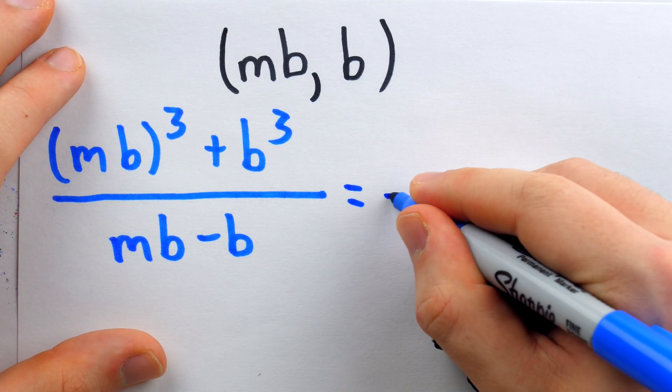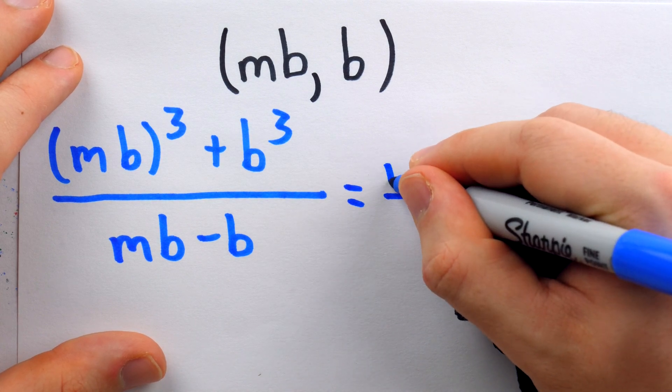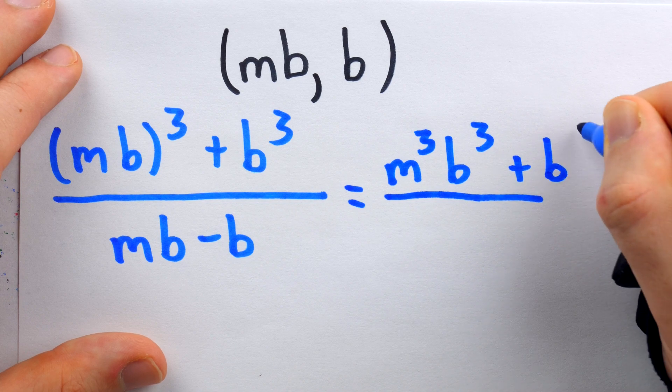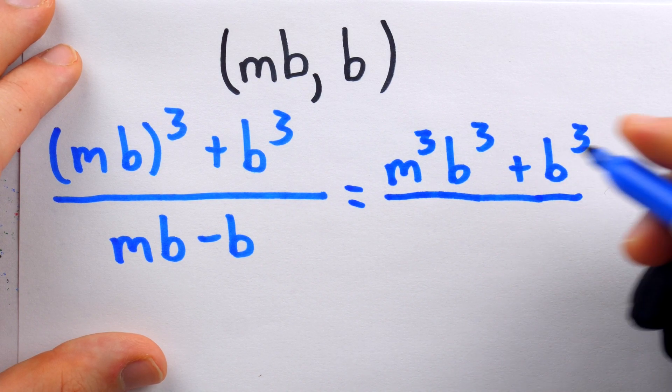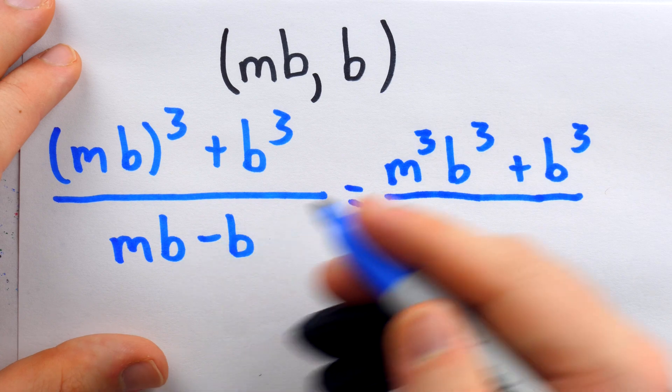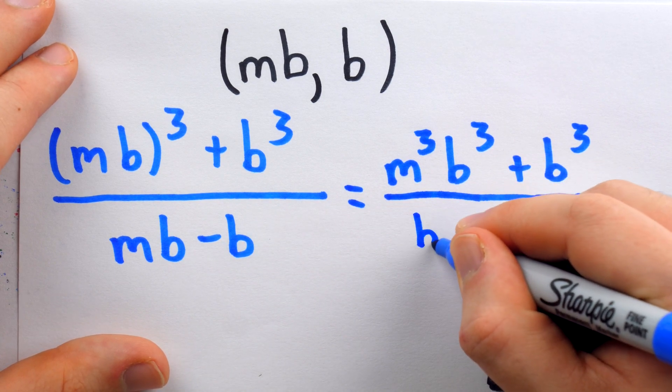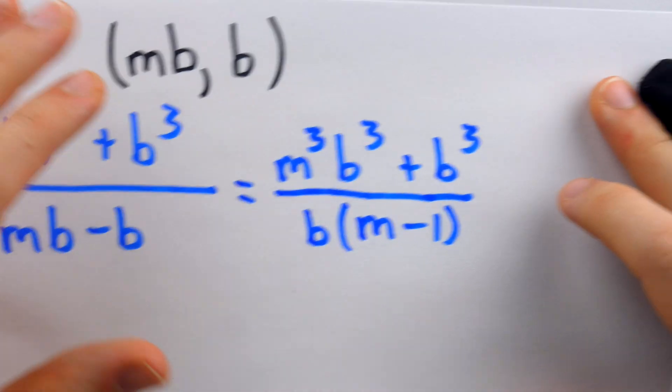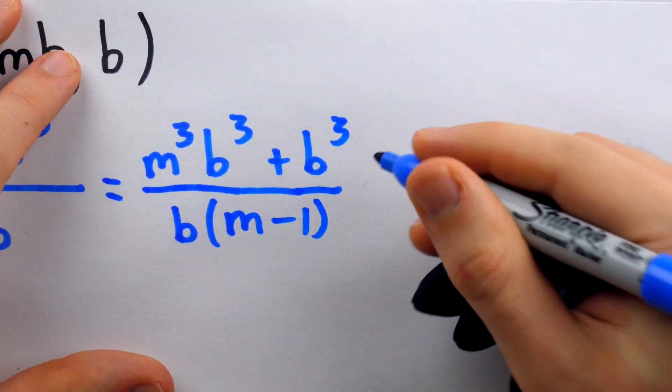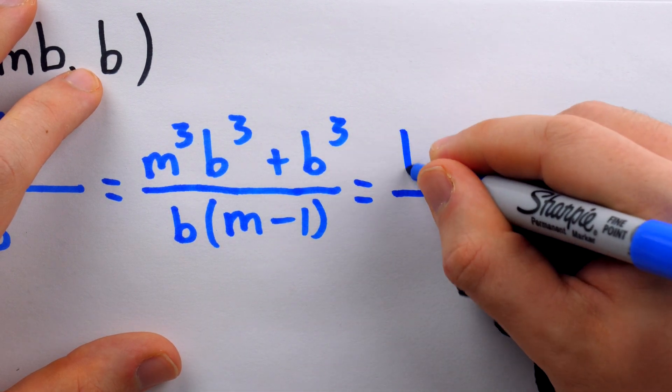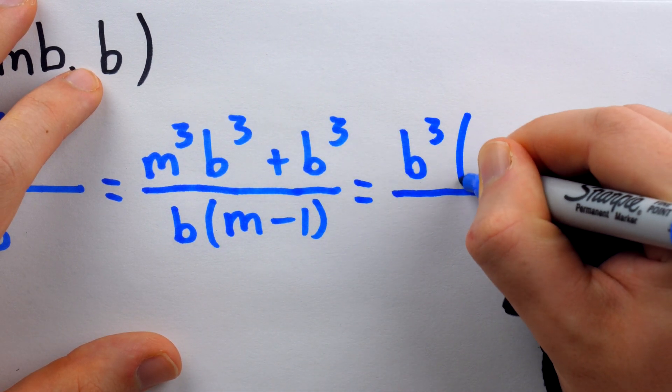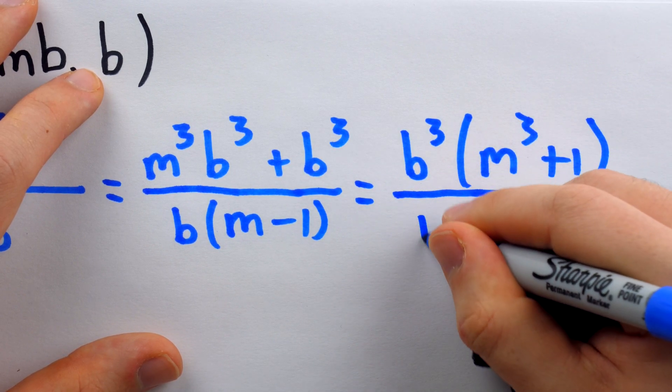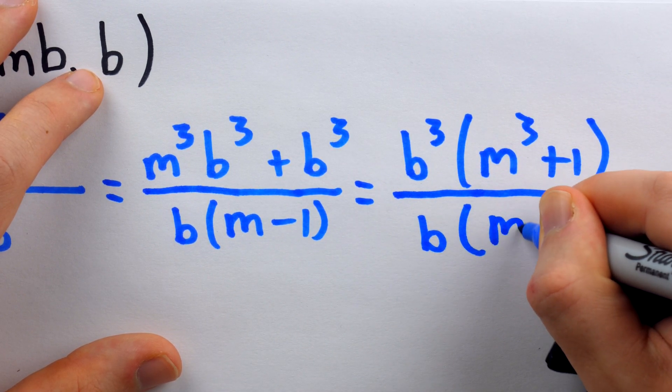Then of course, (mb)³ is m³b³. So in the numerator, we have m³b³ + b³. So we'll be able to factor b³ out of the numerator. And in the denominator, let's factor out that b from both terms. So we have b times (m - 1). Then as we said in the numerator, we'll factor out a b³. So we're going to have b³ multiplied by (m³ + 1). And in the denominator, we still have that b times (m - 1).